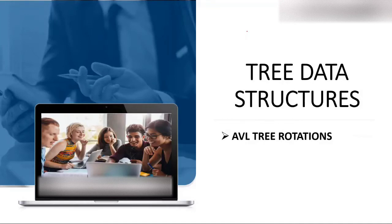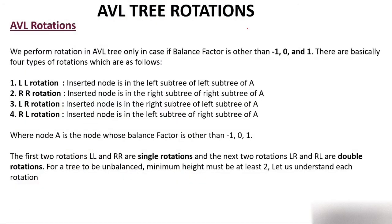So what is rotation, why we do rotation, and what are the different types of rotation — we are going to discuss in this video. We perform rotation in AVL tree only when the balance factor is other than 1, 0, and minus 1. AVL tree is a tree in which the balance factor of every node is either 1, minus 1, or 0. So we perform rotation only when balance factor is not within those values.